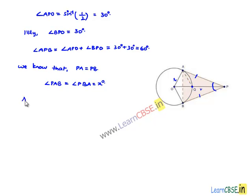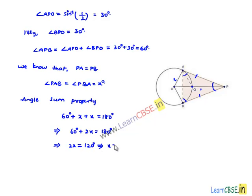Now, let us apply angle sum property in triangle APB. Then we get sum of angles, that is 60 degrees plus X degrees and X degrees will be equal to 180 degrees. That implies 60 degrees plus 2X is equal to 180 degrees, which implies that 2X is equal to 180 minus 60 degrees, which is 120 degrees. This further implies X is equal to 120 degrees by 2, that is 60 degrees. So, we got here angle PAB is equal to 60 degrees.